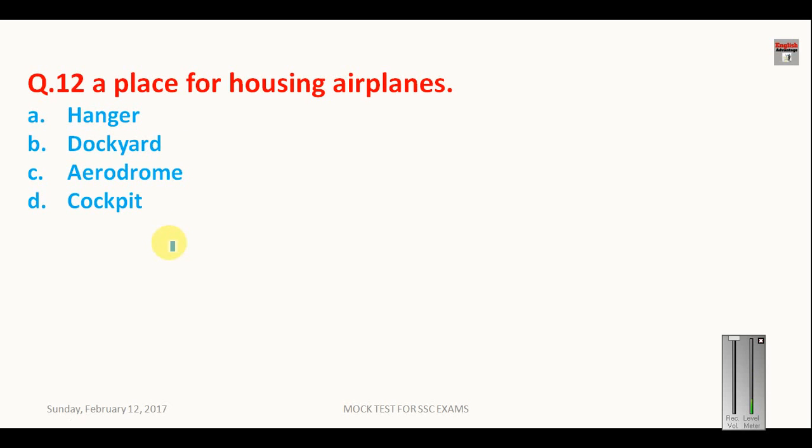Question number 12: A place for housing airplanes is called hangar. In dockyard they are repaired. This is airport and this is cockpit. It's a place in airplane where pilots sit and they ride the plane.